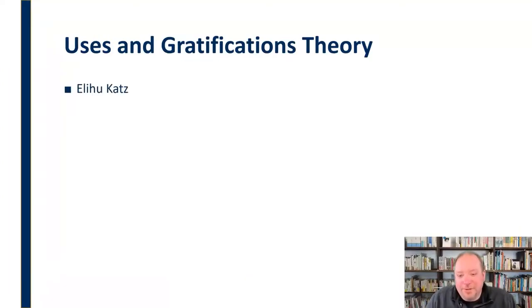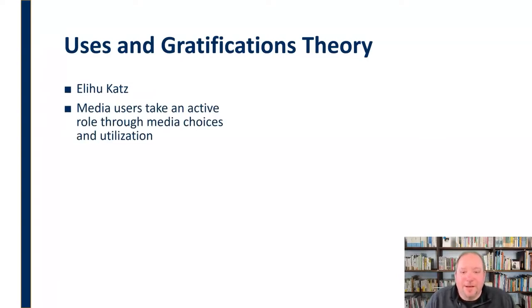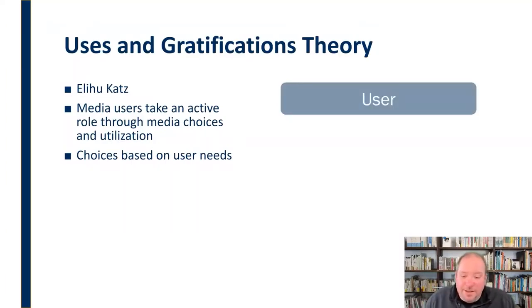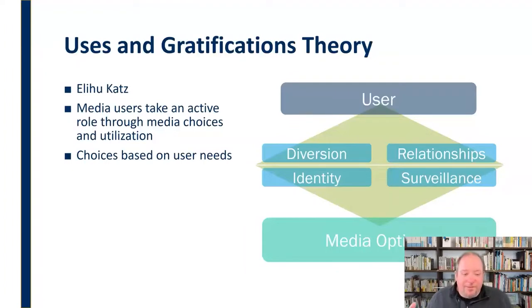There's also what we call uses and gratifications theory. This is from Elihu Katz. Elihu Katz said that media users take an active role through media choices and utilization. Based on their user needs, these users make choices that will impact their utilization. That's based on gratification. The user is going to have a variety of media options. We have all kinds of ways that we can express ourselves and use the media and choose which one best meets our needs for that situation. Katz said there are these different needs and categories of needs: diversion, personal relationships, personal identity, and surveillance.